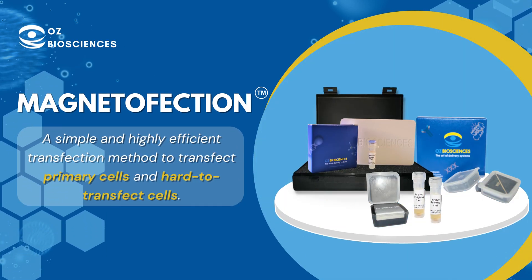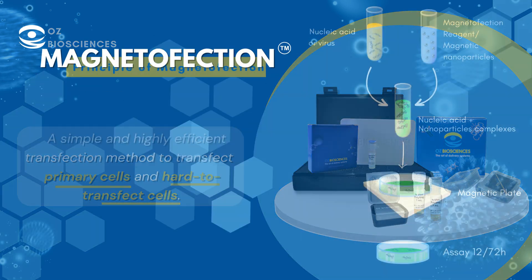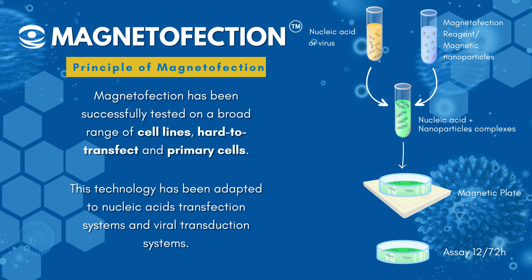OZ Biosciences trademarked MagnetInfection technology is a simple and highly efficient transfection method to transfect primary cells and hard-to-transfect cells. MagnetInfection has been successfully tested on a broad range of cell lines, hard-to-transfect and primary cells. This technology has been adapted to nucleic acid transfection systems and viral transduction systems.